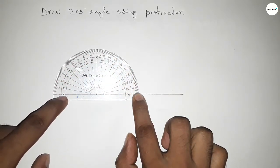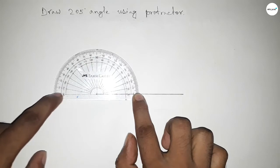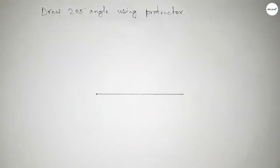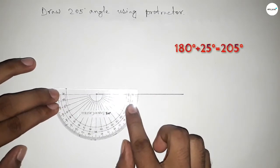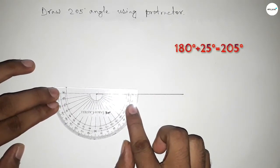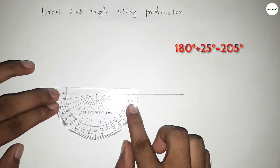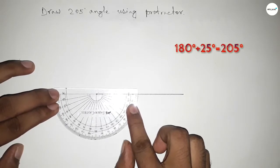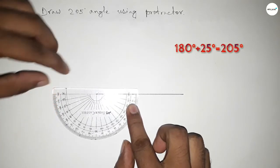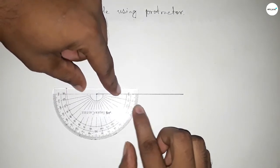This is up to 180 degree angle, but we have to find 205 degree angle. So we have to add 25 degree angle with 180, then we can get 205 degree angle. So putting the protractor by this way.